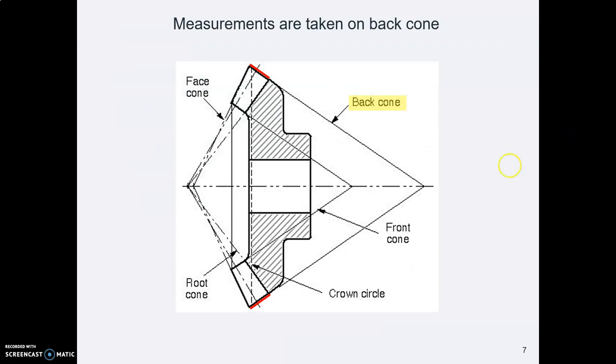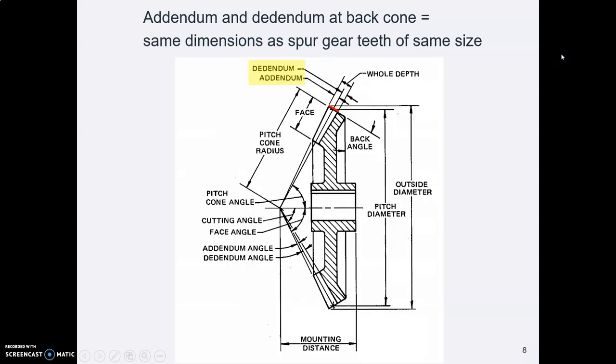The difference is that with a bevel gear you're taking the measurements along the back of this tooth. So remember the basic gear shape is a cone, and here's the tooth that starts big in the back and gradually tapers down. It's along the back where you take the measurements for addendum and dedendum and so forth.